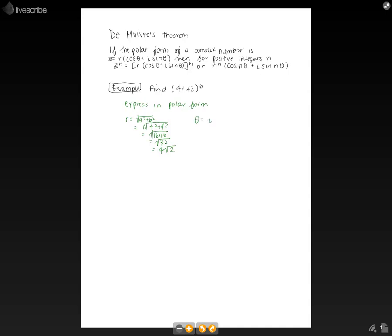And theta is equal to the inverse tangent of b over a, which is equal to the inverse tangent of 4 over 4, which equals pi over 4. So the equation in polar form is 4 square root of 2 times (cosine pi over 4 plus i sine pi over 4). For detailed instruction of this, refer to the complex numbers in polar form video.